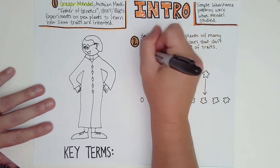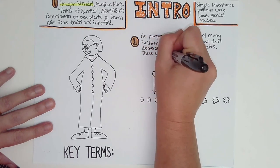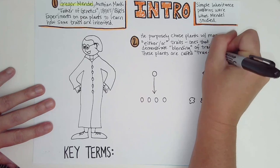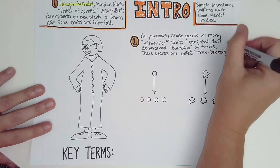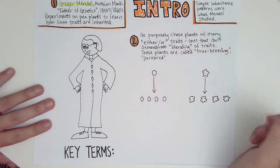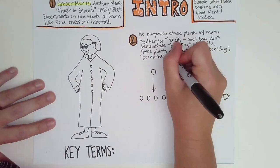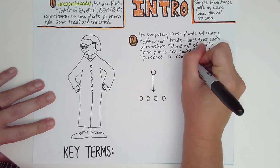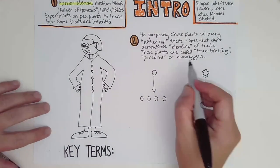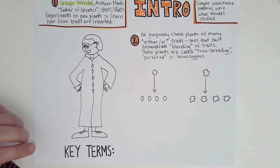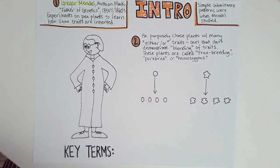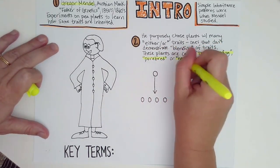The plants Mendel used are called a few different names: true breeding, purebred — which means the same thing — or, in more genetic terms, homozygous. Homo means same, and since you get two copies of each gene, homozygous means both copies are the same. Let's highlight these three terms that all refer to purebred plants.